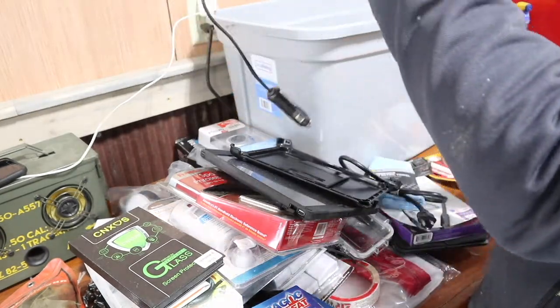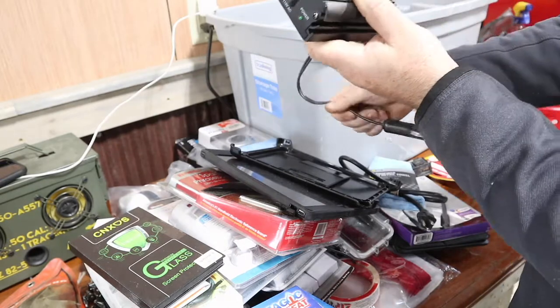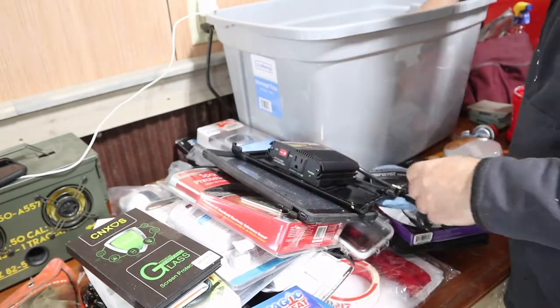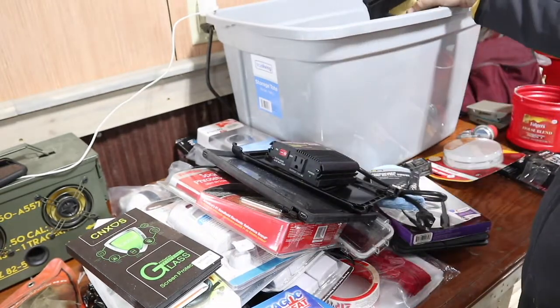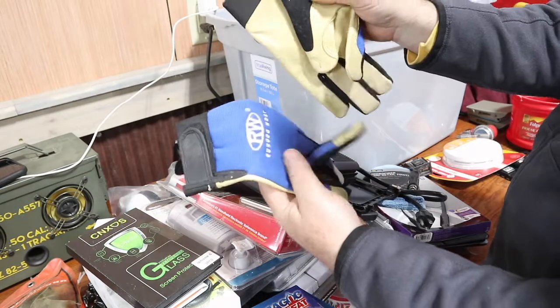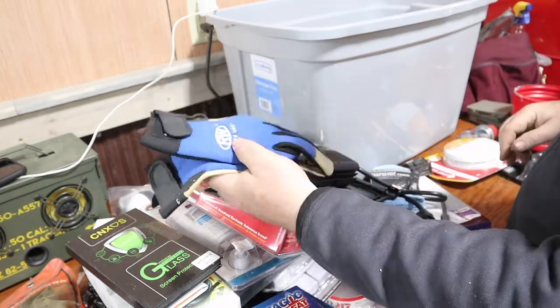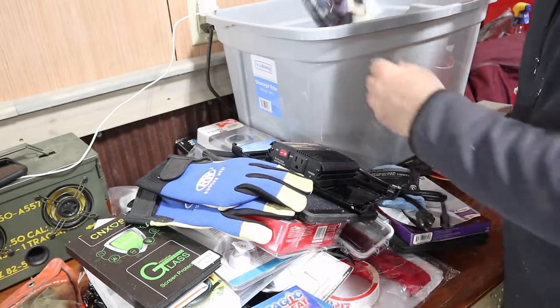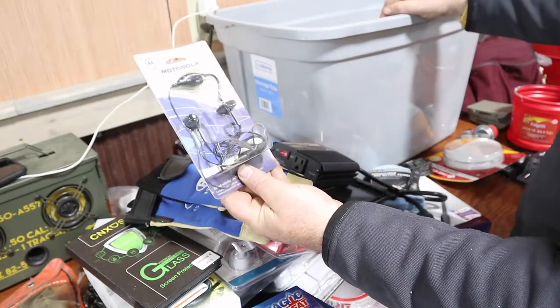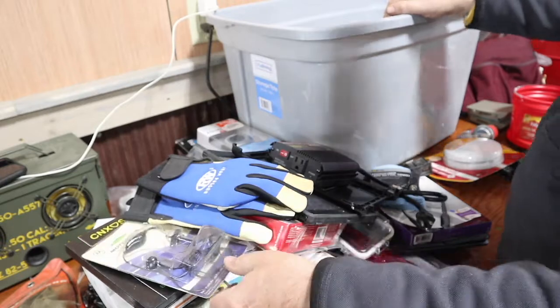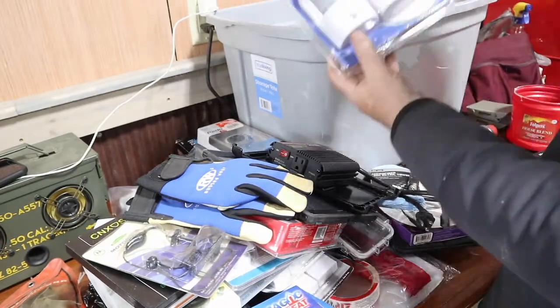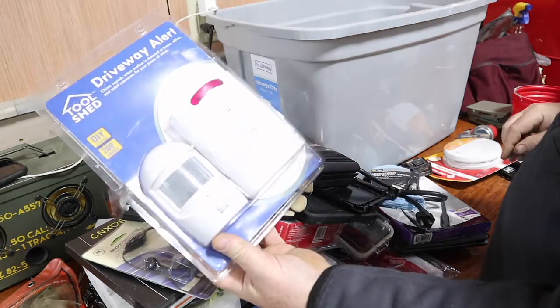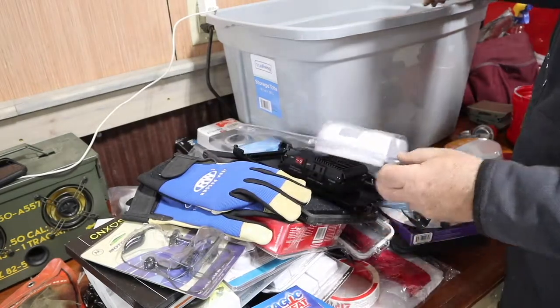Power inverter, cigarette lighter adapter. All kinds of stuff. I paid $15 for this bin. Some brand new work gloves. Motorola. Haven't seen anything from them in a while. But headphones. Another driveway alarm. I'm making a mess here.